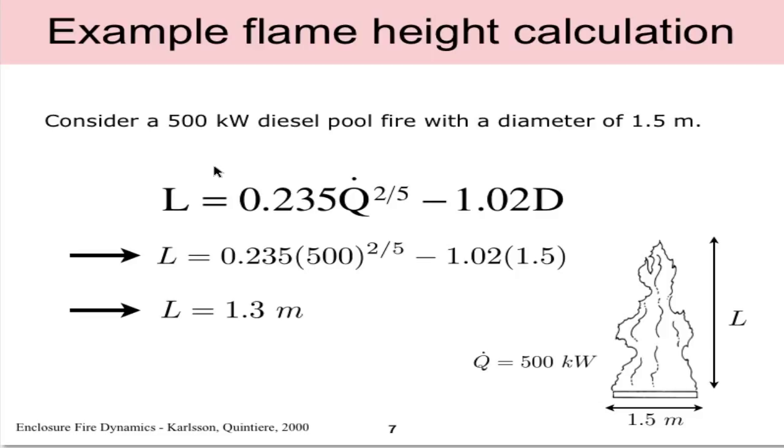Let's consider an example where we have a 500 kilowatt diesel pool fire with a diameter of 1.5 meters. If we have Q equals 500 and diameter of 1.5, if we plug those into the above equation and notice the units are consistent, 500 kilowatts, 1.5 meters, we get out a physical flame height L of 1.3 meters from this equation.